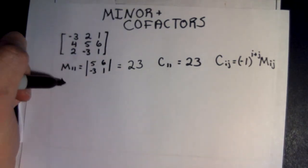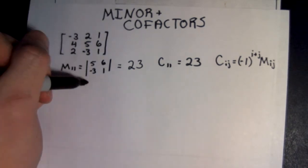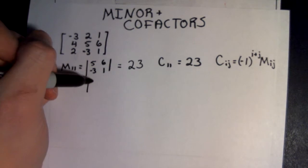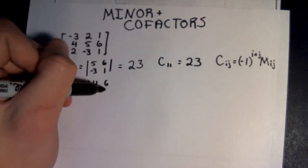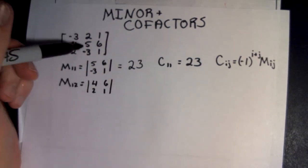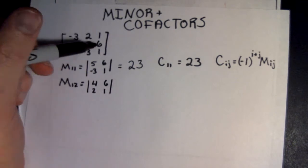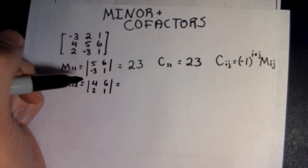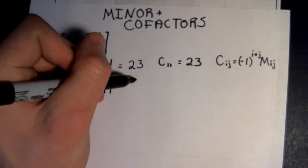Now we look at M12, which is going to be equal to the determinant of 4, 6, 2, 1. Because now we get rid of the second column, so we have 4, 6, 2, and 1. That's going to be 4 minus 12, which is negative 8.